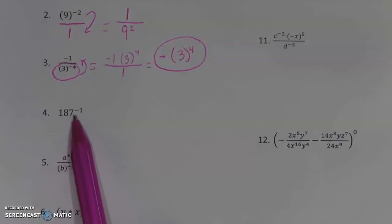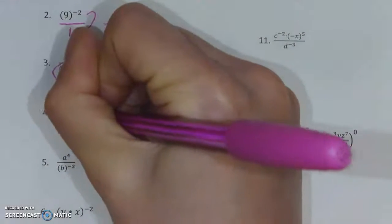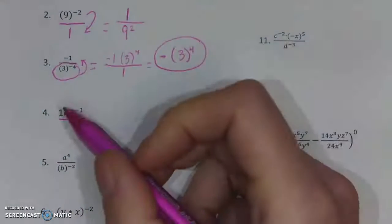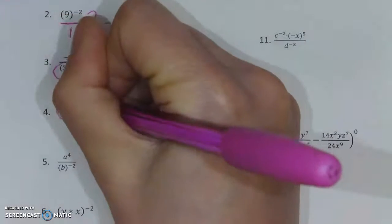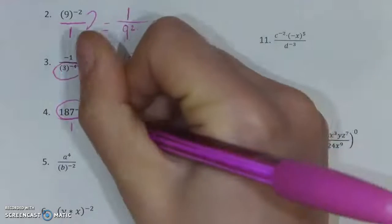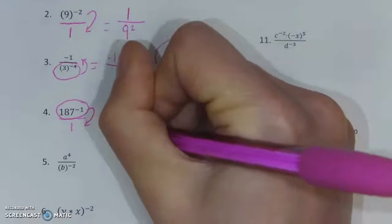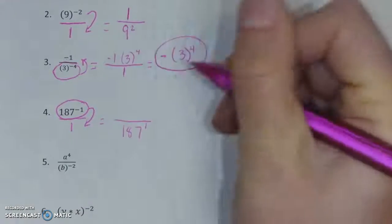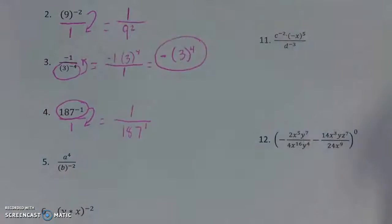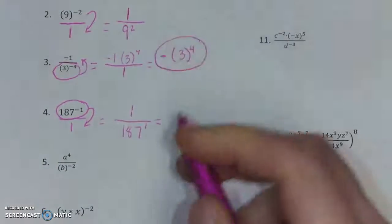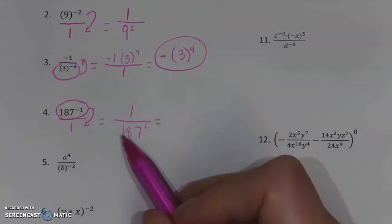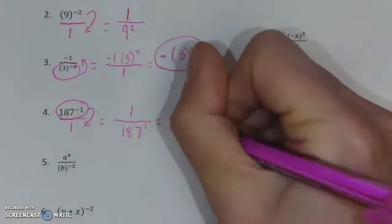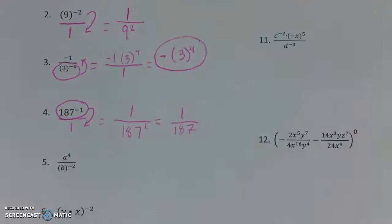When you get something like 187 to the negative first, that negative is just saying adjust the fraction. So draw in your fraction: 187 to the negative one over one. Move the base with its exponent to the bottom, and that gives us one over 187 to the first. Since a power of one doesn't change numbers — it just says we have one of the 187s — I can just write 187 in the bottom without that exponent. So the final answer is one over 187.